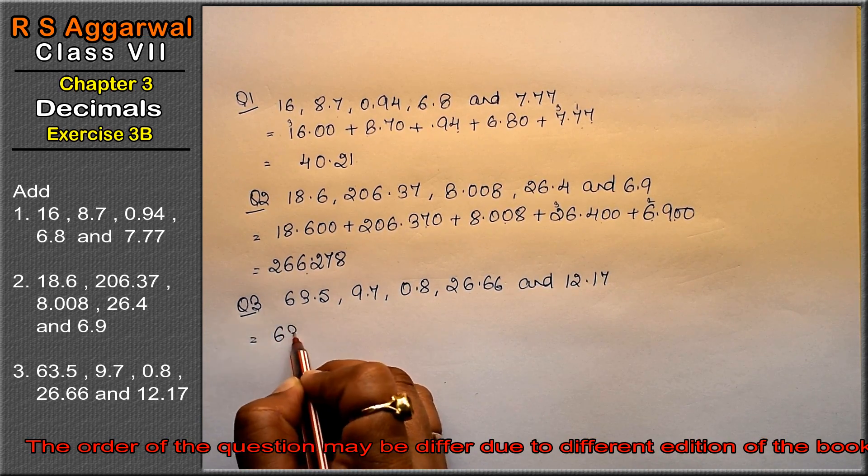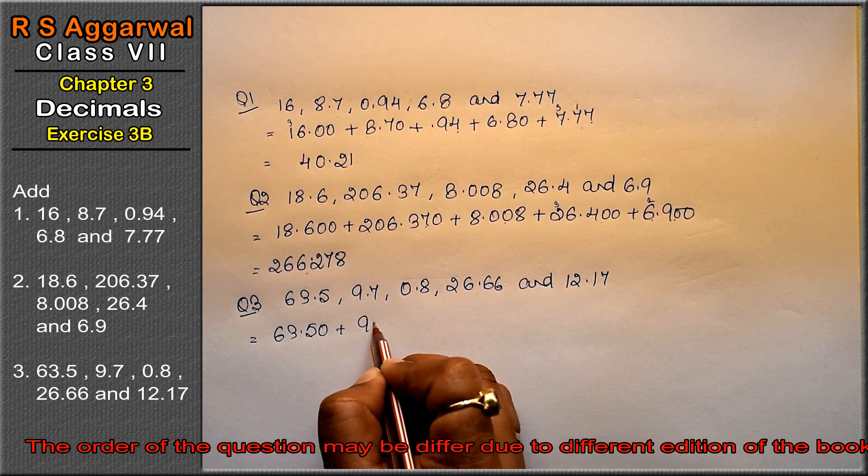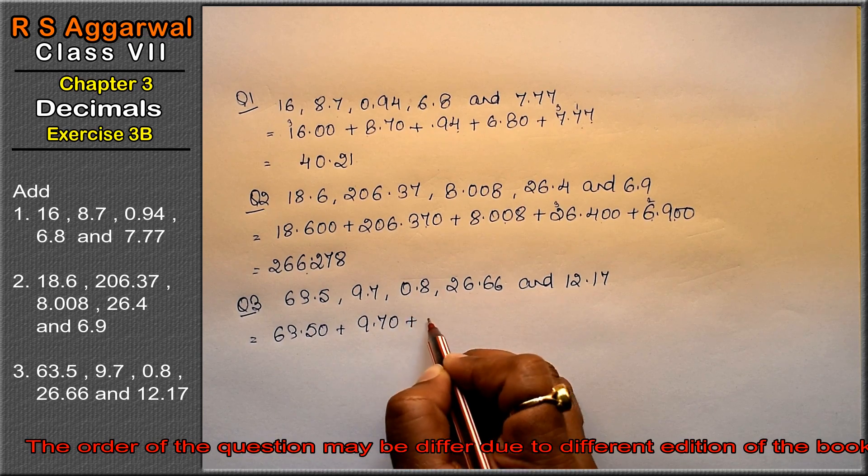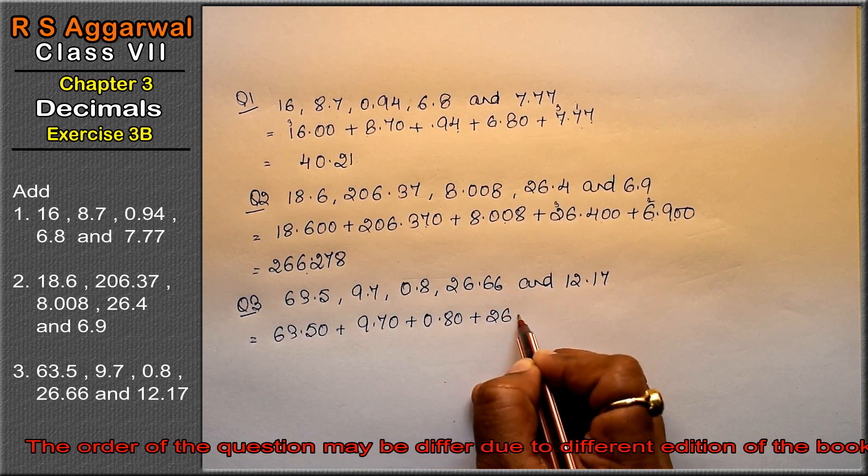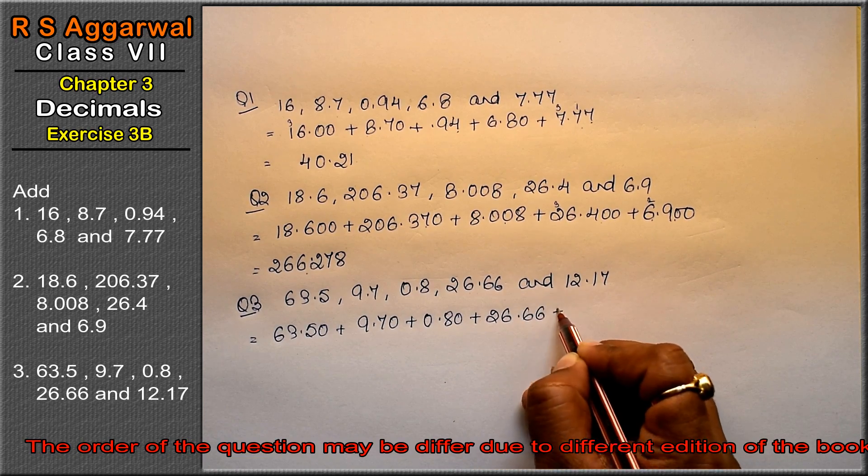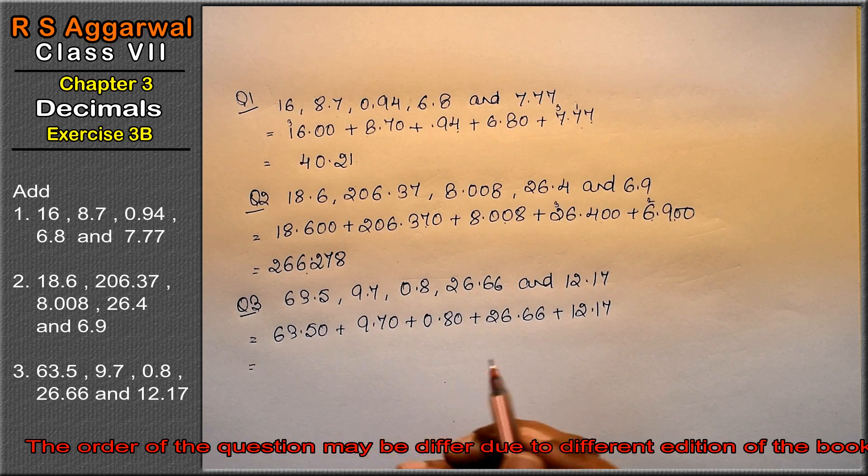Right friends, like fraction me kar riyo. Maximum dekhye 2 digit hai. Toh 63.50 plus 9.70 plus 0.80. Aap chahe toh like fraction me kar riyo. Varnha aap as it is bhi agar aap comfortable hain toh as it is bhi kar sakte hain. Right?